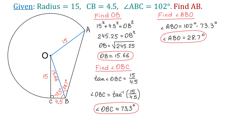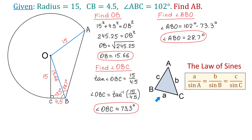Before we continue, let's review the law of sines. In a triangle with angles A, B, and C, where the side opposite angle A is side a, the side opposite angle B is side b, and the side opposite angle C is side c, the law of sines states that a over sine A equals b over sine B equals c over sine C. When applying this law, we use only two ratios at a time. For example, if we know angles A and B and side b, we can find side a. Note that to find a side, we need to know the opposite angle as well as another side and its opposite angle.